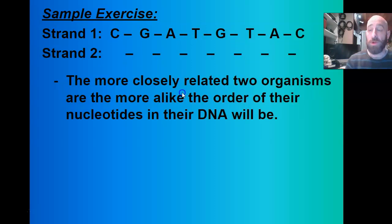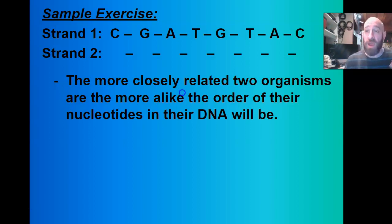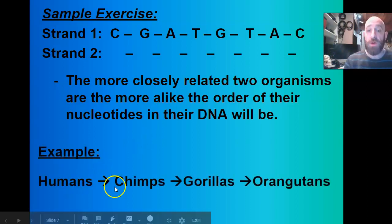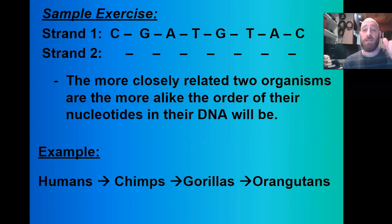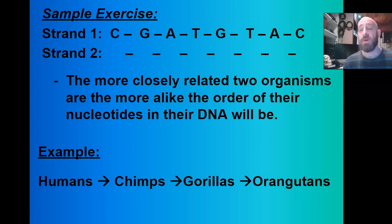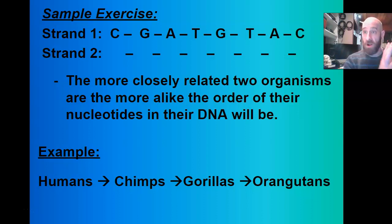The more closely two organisms are related, the more similar their DNA will be. For example, comparing humans to chimps — we are actually one of the five great apes, along with gorillas, chimps, orangutans, and bonobos. We are very similar genetically to these other animals — about 98% the same as chimps — because our strand of DNA is almost identical, with the letters appearing in nearly the same order.